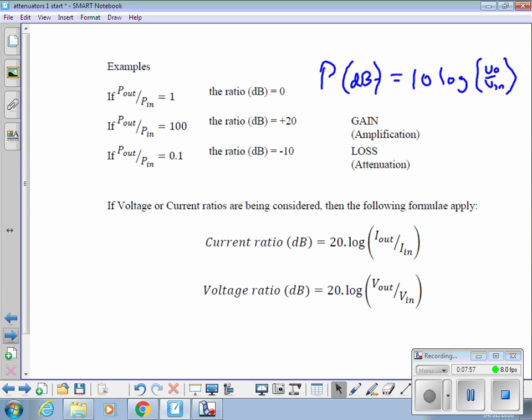Where P_out over P_in is greater than one, i.e. 100, if you put that in your calculator, ten times log of 100, you'll get 20, 20 dB.